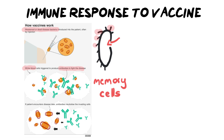Now, what happens if you are actually exposed to the disease at a later stage? You already have the antibodies, and so the response is very fast, very quick, and you won't even feel anything. You might have a runny nose, maybe a bit of a fever, but no serious symptoms like, for example, encephalitis — which would be like swelling of the brain — which are some of the more serious side effects of having viral infections.